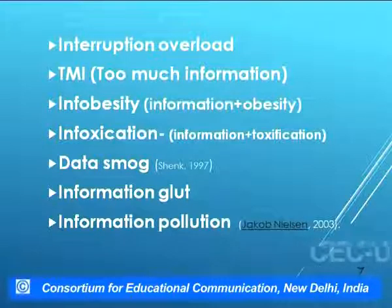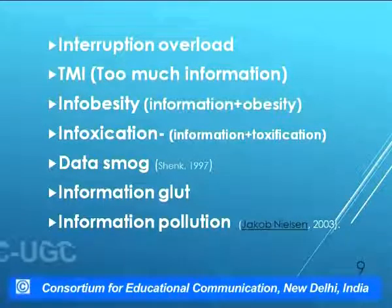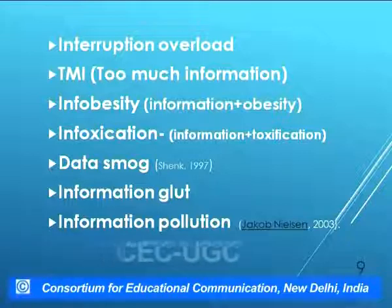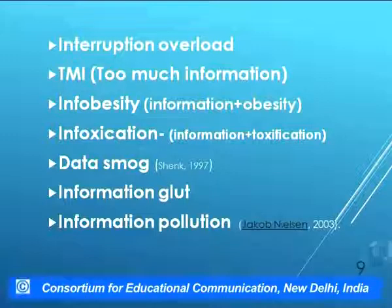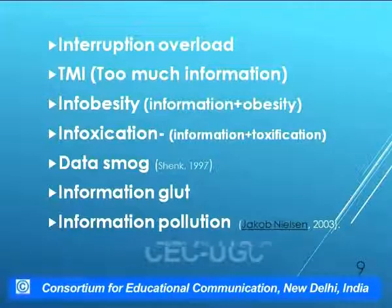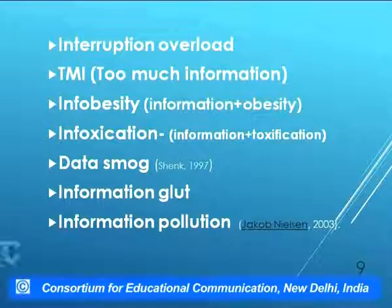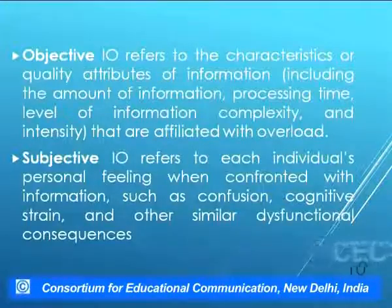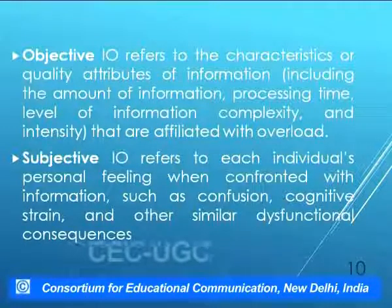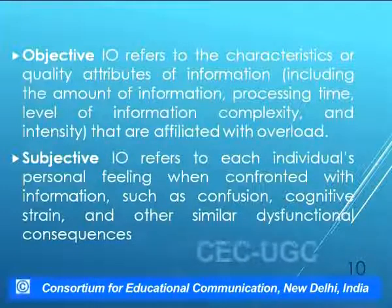Information overload has several synonyms: interruption overload, TMI (too much information), infobacity (information plus obesity), infoxication (information toxification), data smog, information glut, and information pollution. There are also two types of information overload. The first is objective IO, which refers to the characteristics or quality attributes of information, such as amount of information, processing time, level of complexity, and intensity.